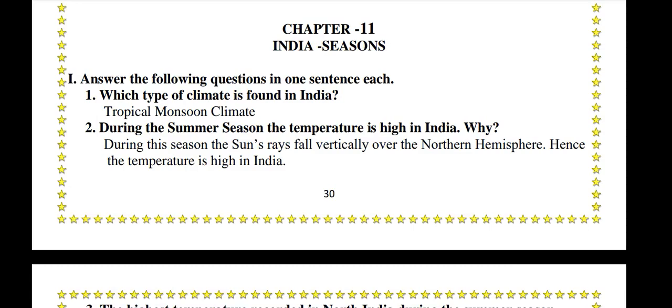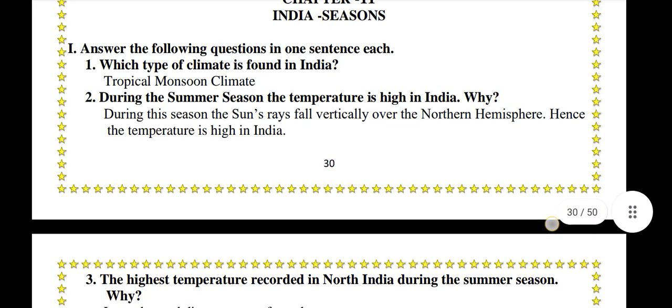During the summer season, the temperature is high in India. Why? During this season, the sun's rays fall vertically over the northern hemisphere. Hence, the temperature is high in India.